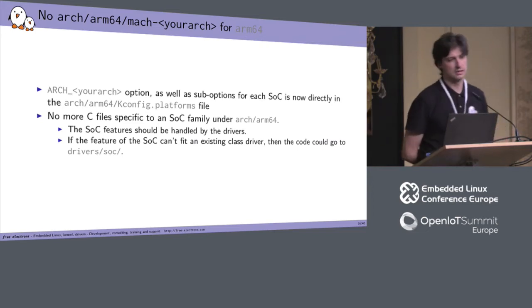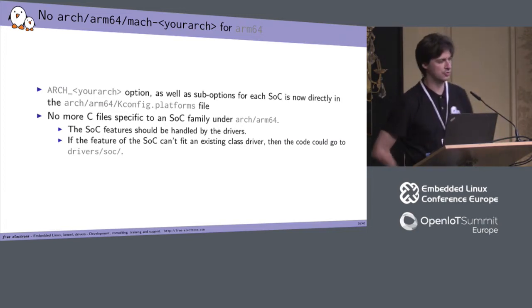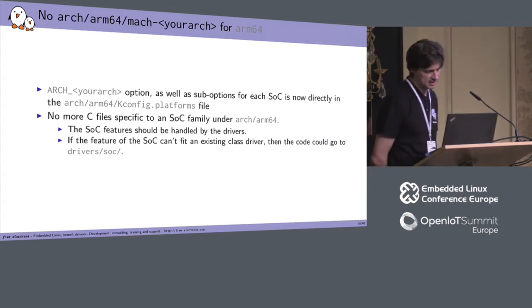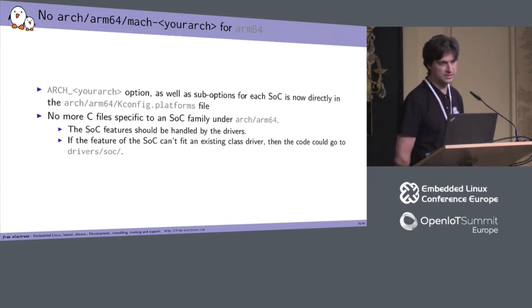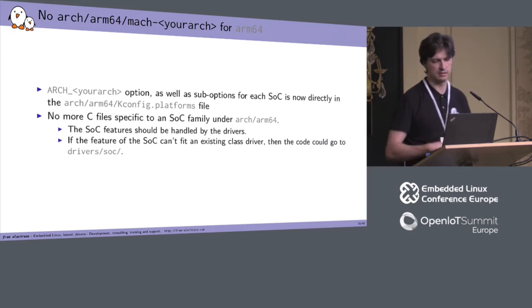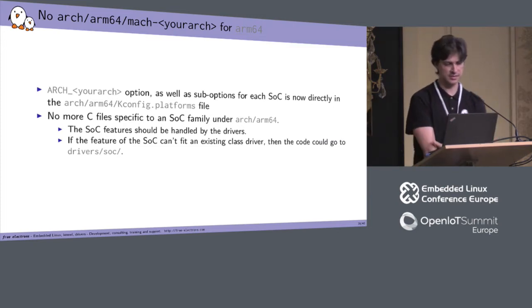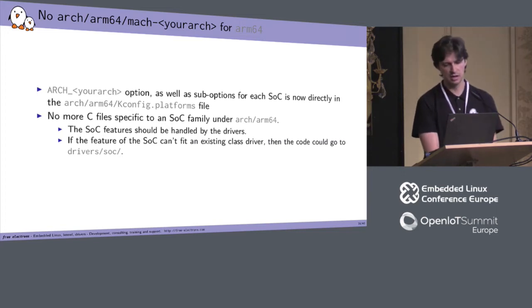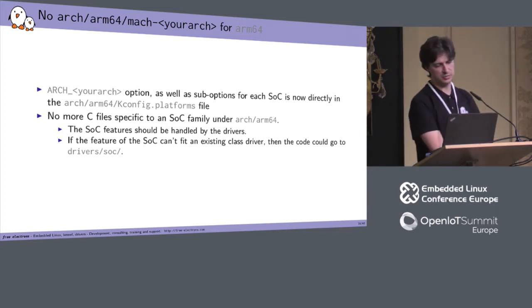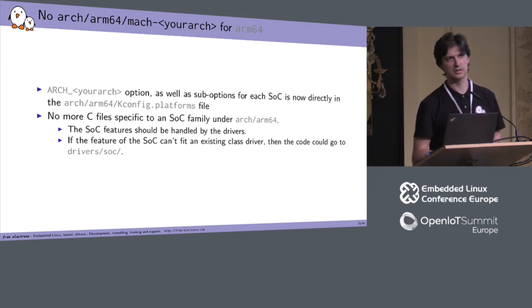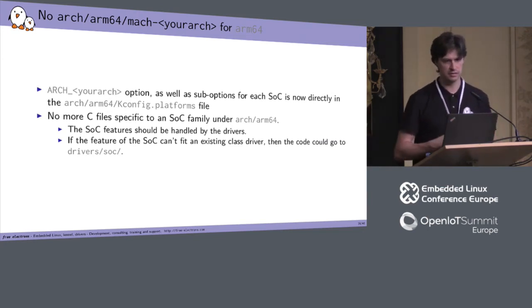On ARM64, there is no mach-something — and this is one of the big differences from ARM32. In ARM32, for each new SoC family you have a mach-something directory. Here, you have no more of those. There are no more C files specific in this directory. All the SoC features should be handled by the drivers. If the feature of the SoC can't fit an existing class driver, then the code could go to driver/soc. You can find some common code for a family of SoCs in this place.